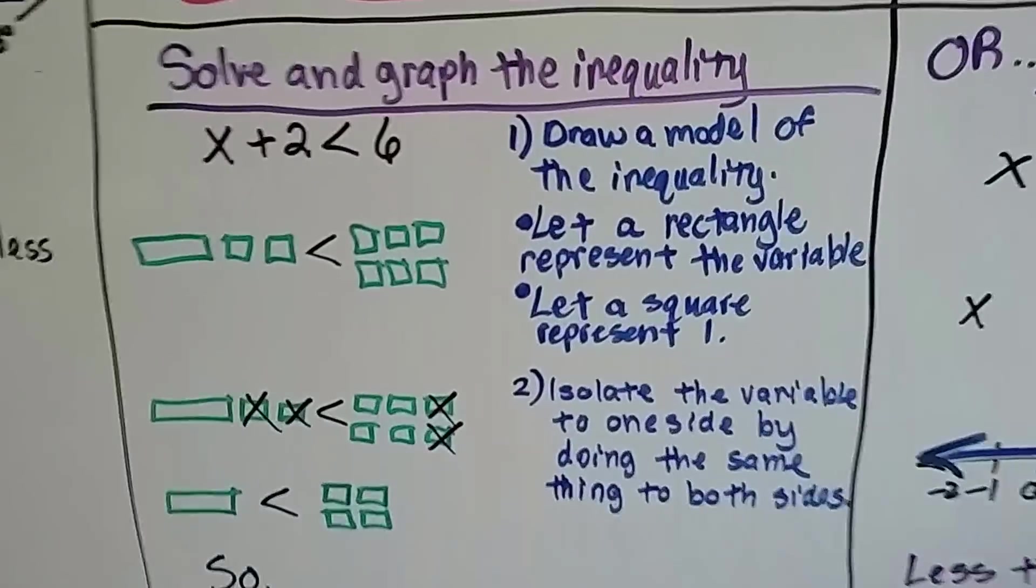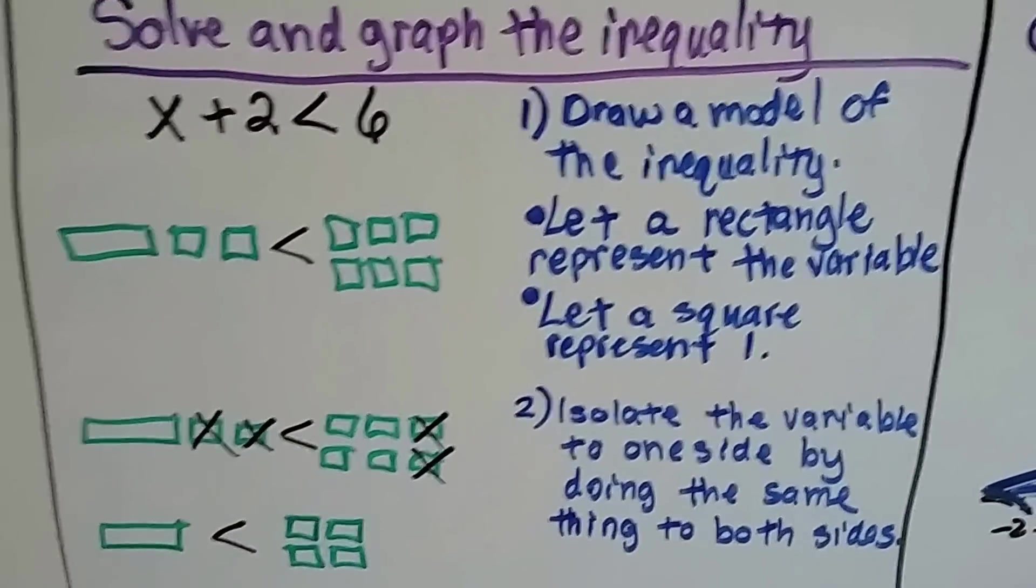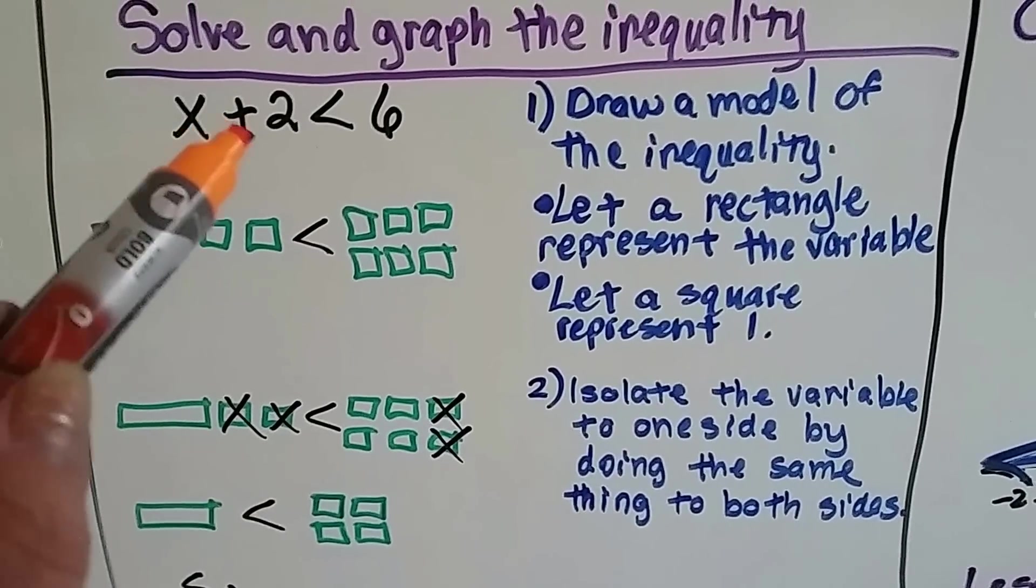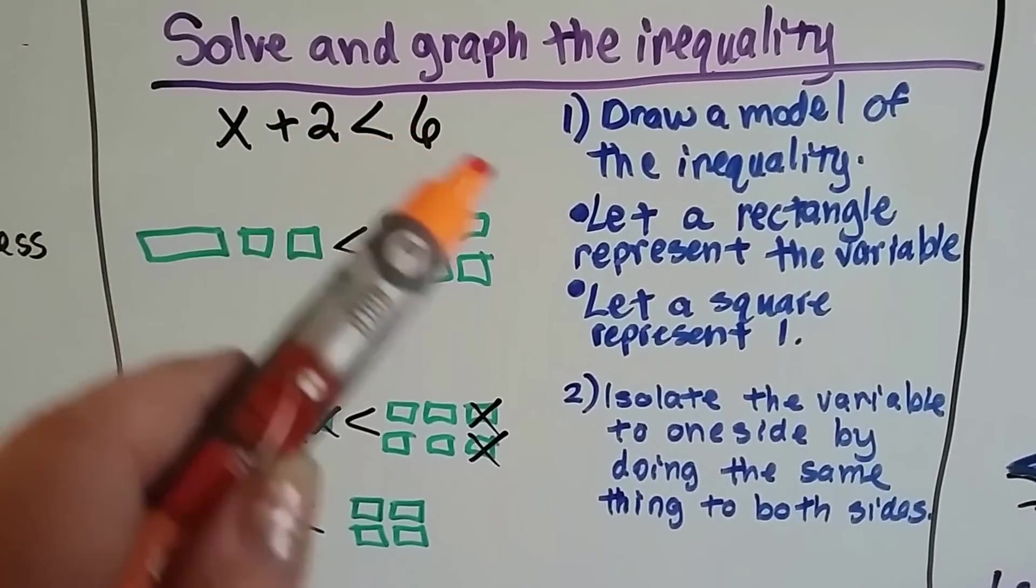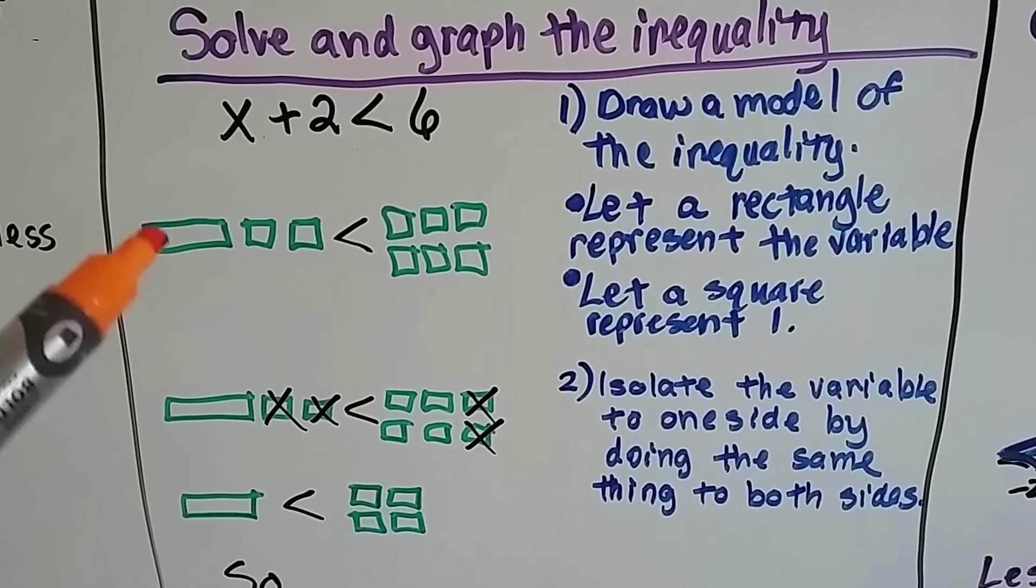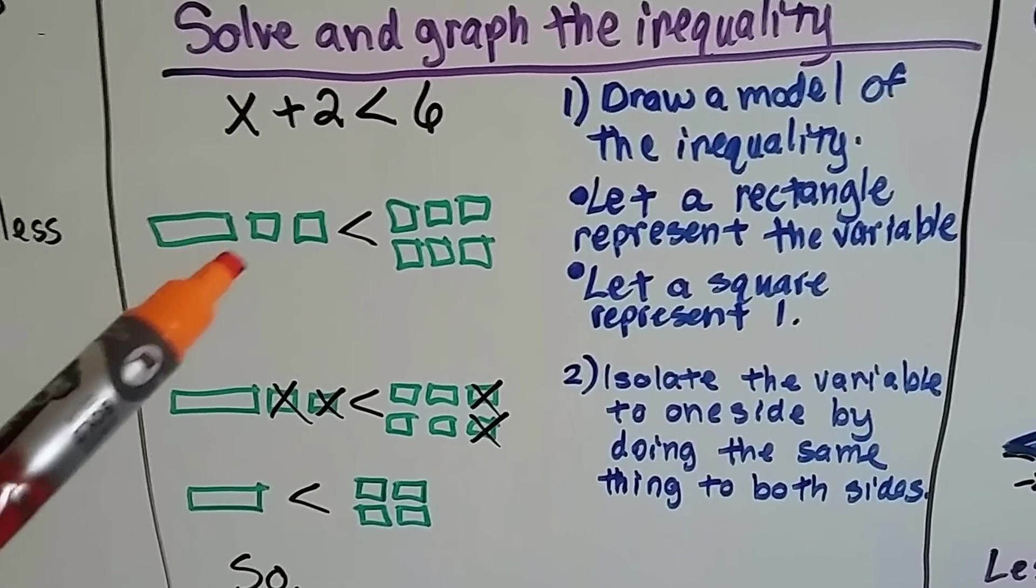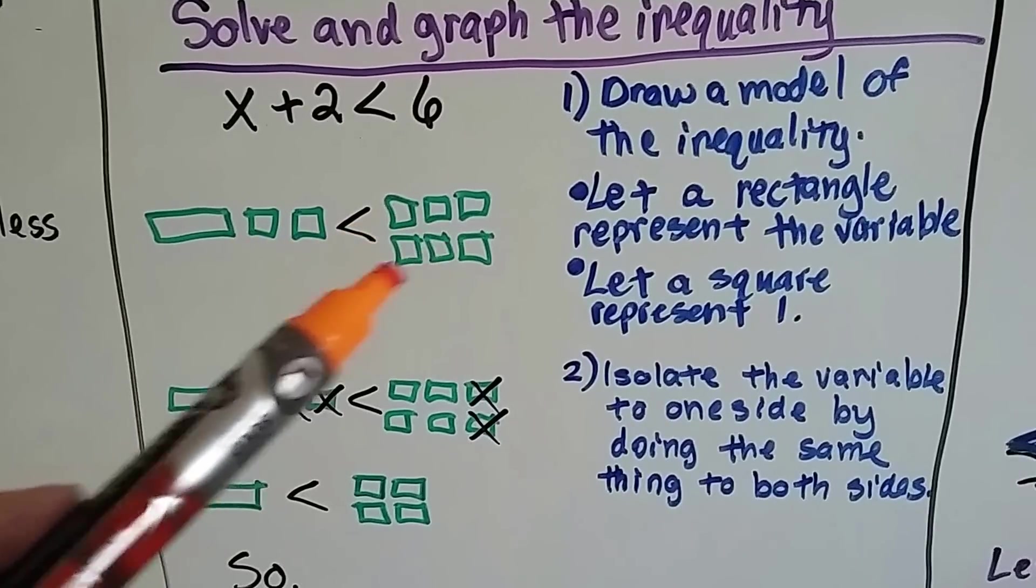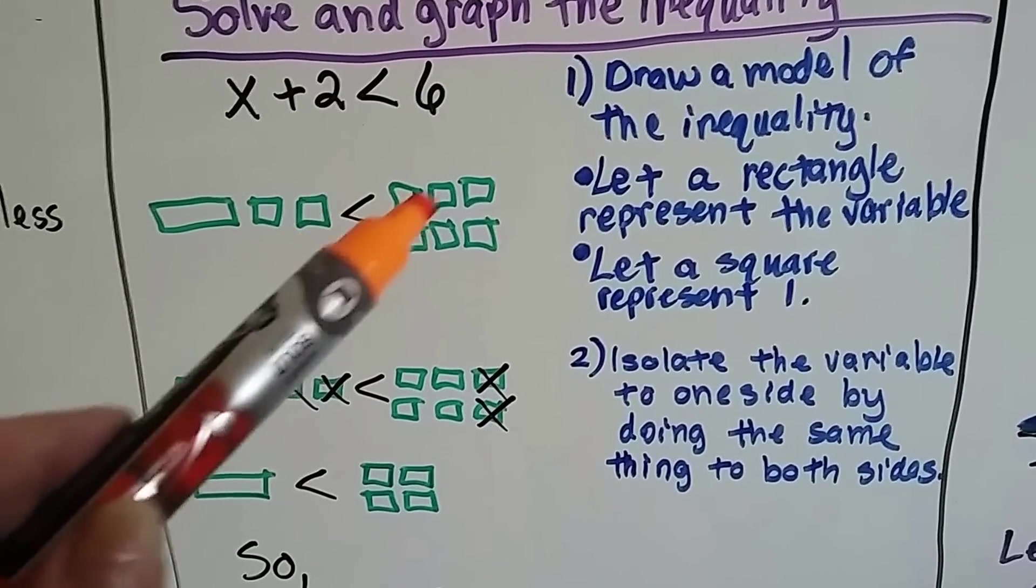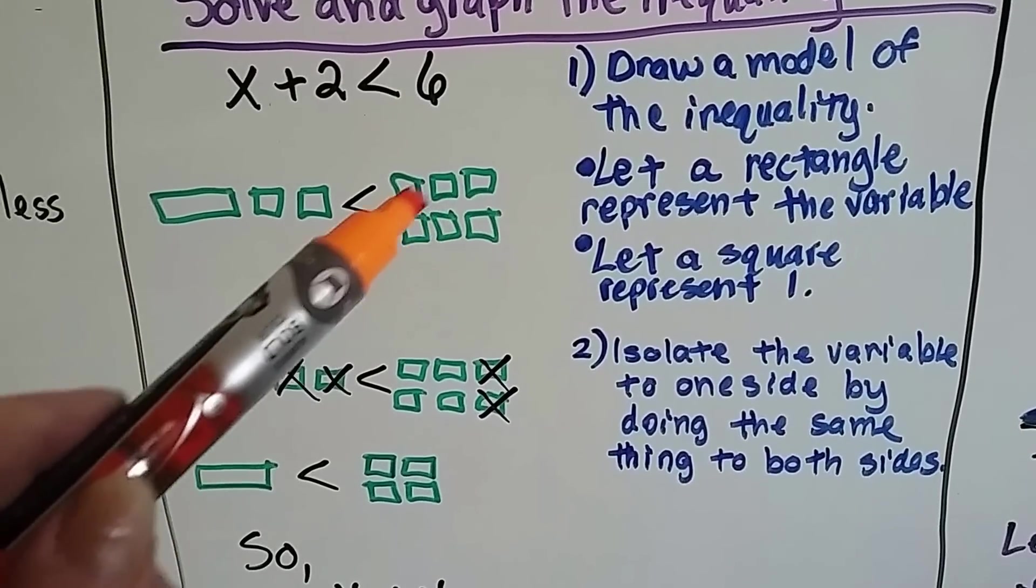So this problem said solve and graph the inequality. So I used models to solve it. We've got x plus 2 is less than 6. So I drew a model of the inequality. I made a rectangle to represent the x, the variable, and then the little squares each represent 1. So here's my x and the 2, and then is less than the 6.